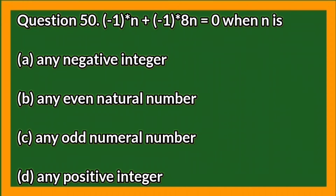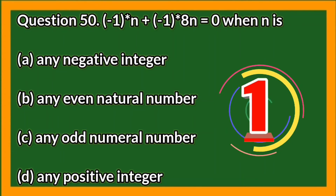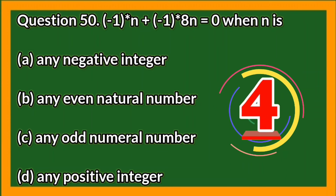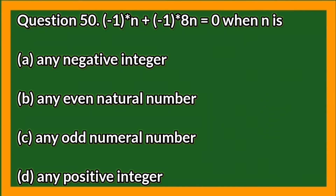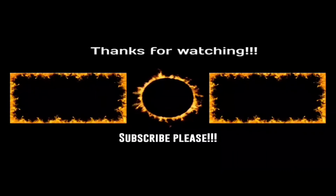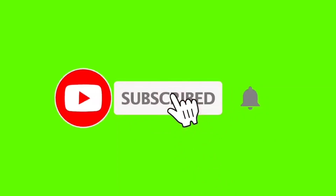If (−1)^n + (−1)^(8n) = 0, then the value of n is?